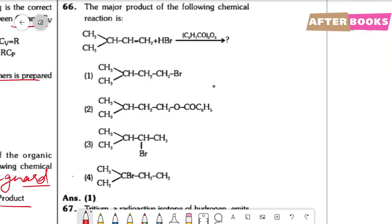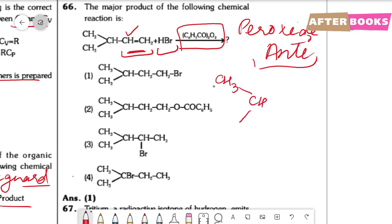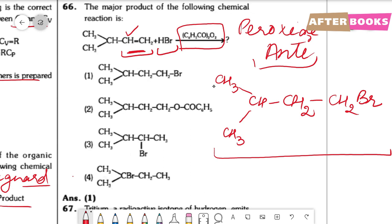Question number 66. The major product of an alkene reacting with HBr in the presence of peroxide. When an alkene reacts with HBr in the presence of peroxide, the anti-Markovnikov's rule (Kharasch effect) operates — hydrogen adds to the carbon with fewer hydrogens. Bromine goes to the carbon with fewer hydrogens' side. The end product is option 1.